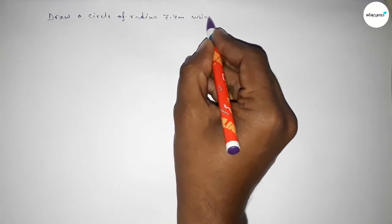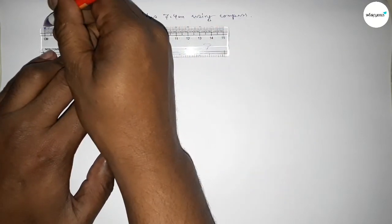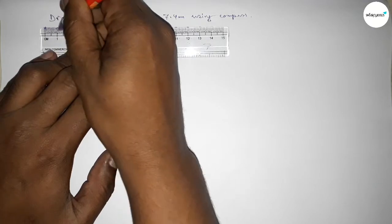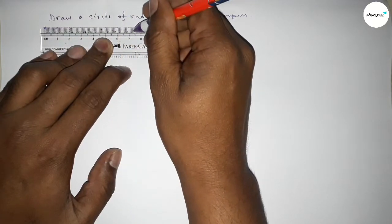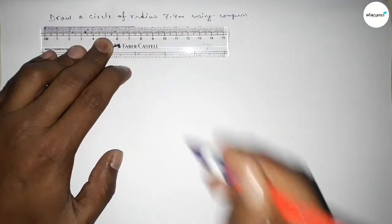By using compass, so let's start the video. First of all, drawing here a line of length 7.4 centimeters. This is starting 0, 1, 2, 3, 4, 5, 6, 7, 7.1, 2, 3, 4. So this is 7.4 centimeters.